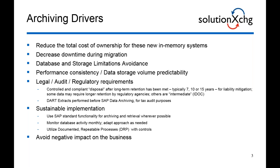Also, utilizing a documented and repeatable process with controls — so that when you're executing the archiving, you have controls in place to do verification tasks and make sure that your archiving is running successfully. The key here is also to avoid negative impacts on the business. Archiving projects can create some negative impacts, and as part of a project you want to identify what the impacts are ahead of time and put a plan in place to avoid those particular impacts before implementing an archiving project.